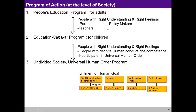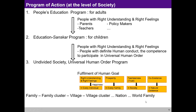Moving beyond education, we can work on all five dimensions: justice, health, preservation, production, and exchange — then have a program for fulfillment of all four human goals, going from family to the world family. When you work at the people's education program level, in 10 years you may transform yourself to a point where this is the only program for you, and in the next 10 years you transform 10 more people. Moving this way, we can bring a thousand crore people to that level of transformation.